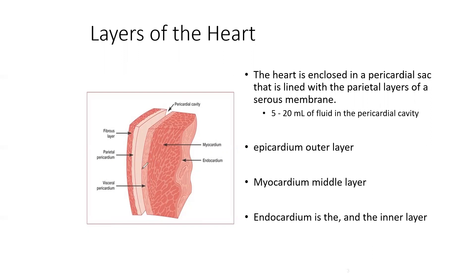Another name for the visceral pericardium is the epicardium, the outer layer. This is a sac that the heart is enclosed in. In between these layers there is a space called the pericardial cavity. It has approximately 5 to 20 mLs of fluid, which allows the heart muscle to glide against the outer pericardial sac.